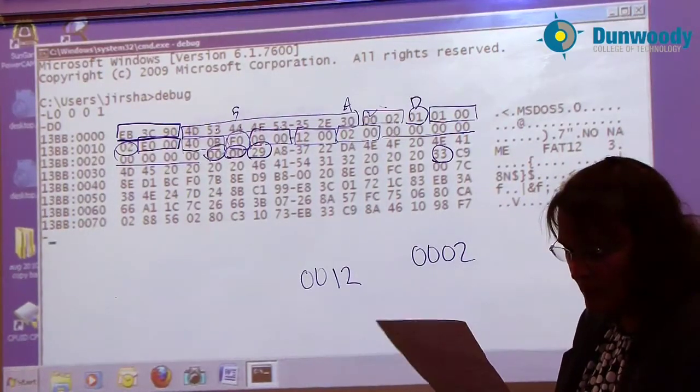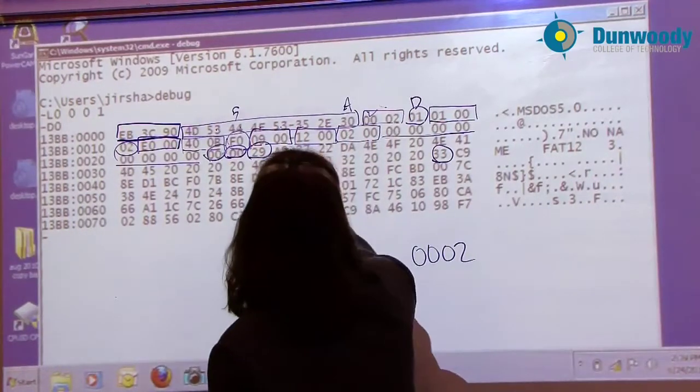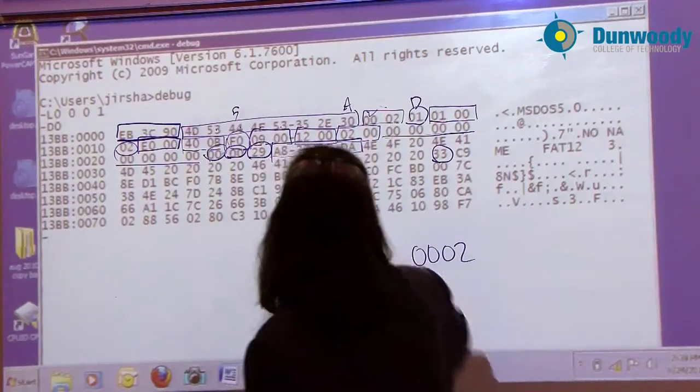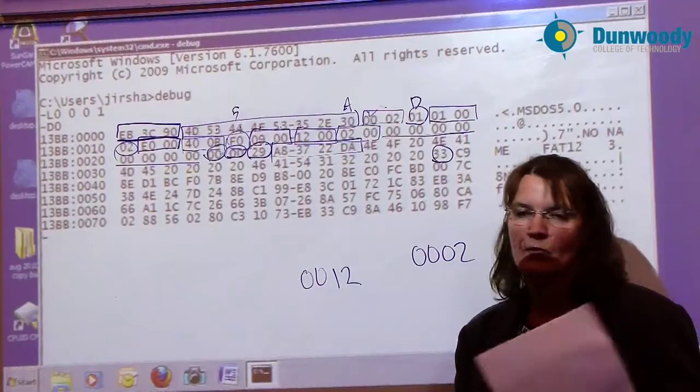The next four bytes over, the 32-bit volume ID assigned by format. This one is like a serial number. If I would reformat this disk, I'd get a different four-byte value.